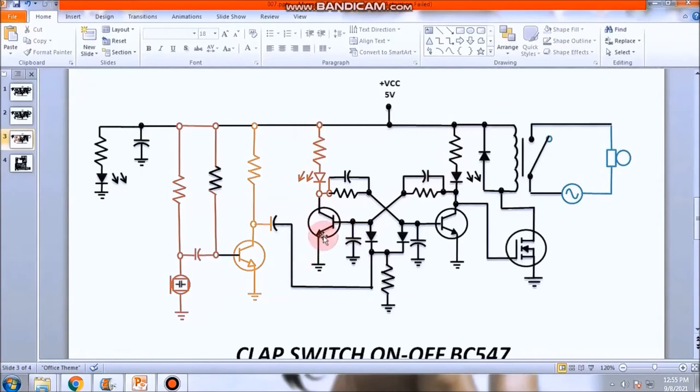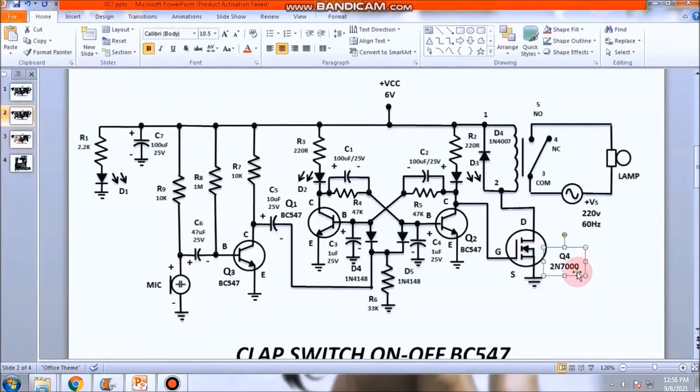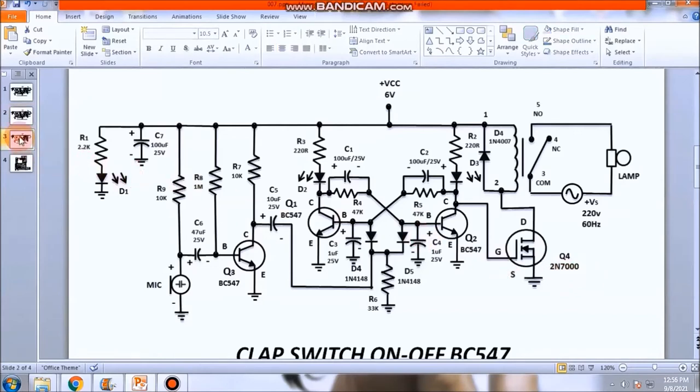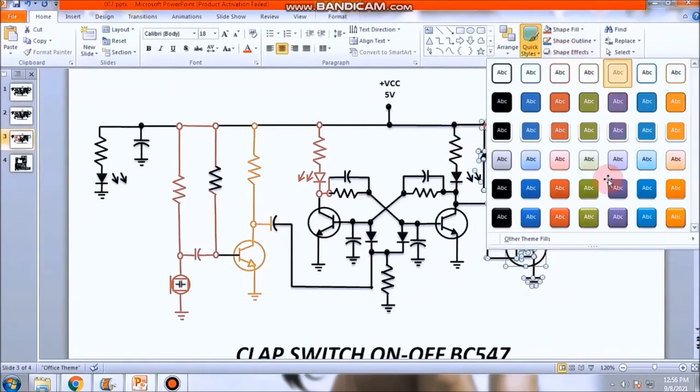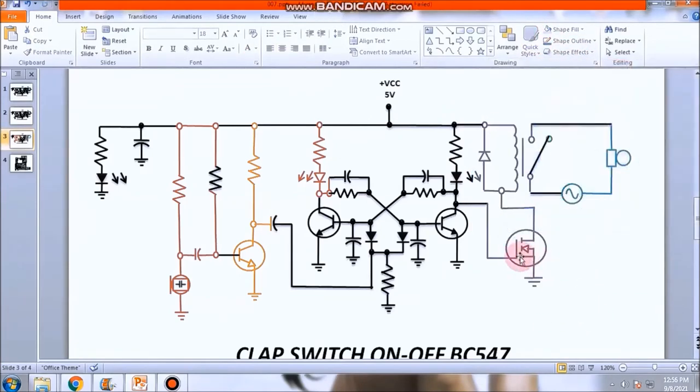Lahat ng current papunta dito sa isang transistor. Dito ang takbo papunta dun. Lahat dyan, pati yung mga kapasitor nag-de-discharge papunta dito. Ang nangyayari nyan yung current papunta rin dito. Ito naman yan yung tinatawag na yun, 2N 7000 MOSFET. Itong MOSFET, ito MOSFET, ito mo yan MOSFET.